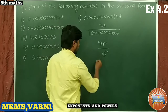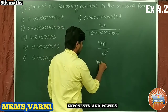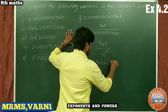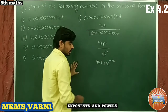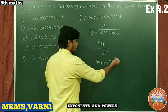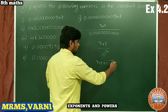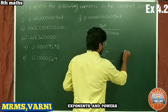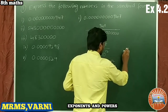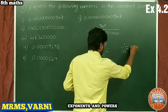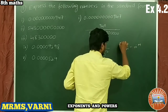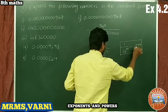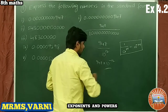This becomes 947 × 10^(−12), because when the denominator goes to the numerator the sign changes. The formula used here is: 1/a^m = a^(−m).